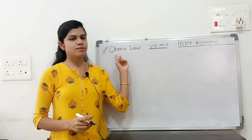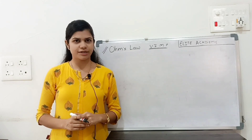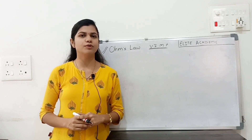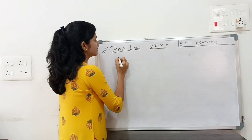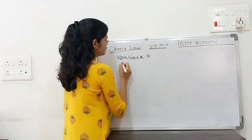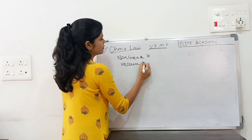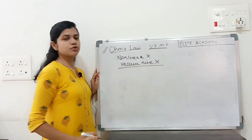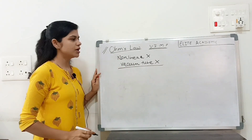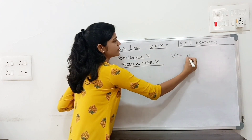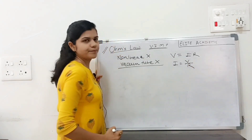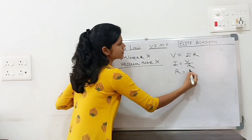Next is Ohm's law. Ohm's law is not applied for non-linear elements. Also, it is not applied for vacuum tubes. Remember these two points. The formula for Ohm's law is V equals IR. From this, I equals V upon R, and R equals V upon I.